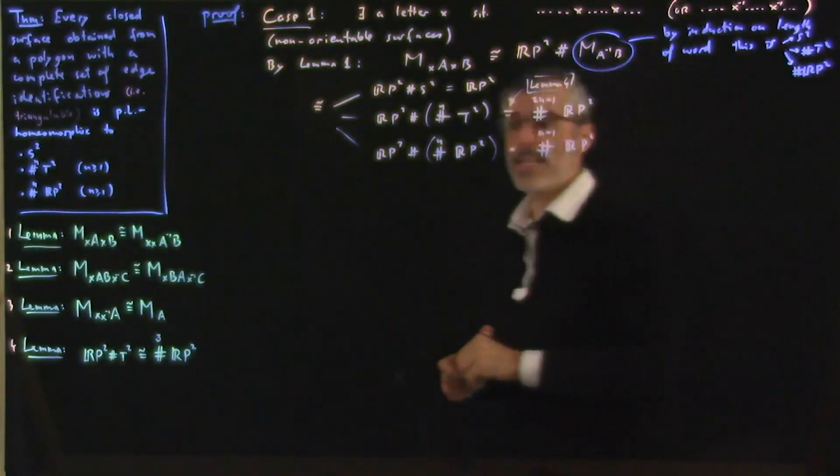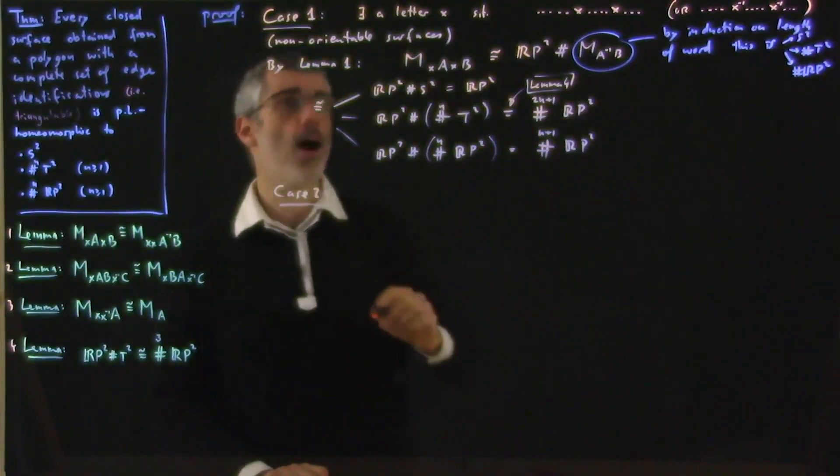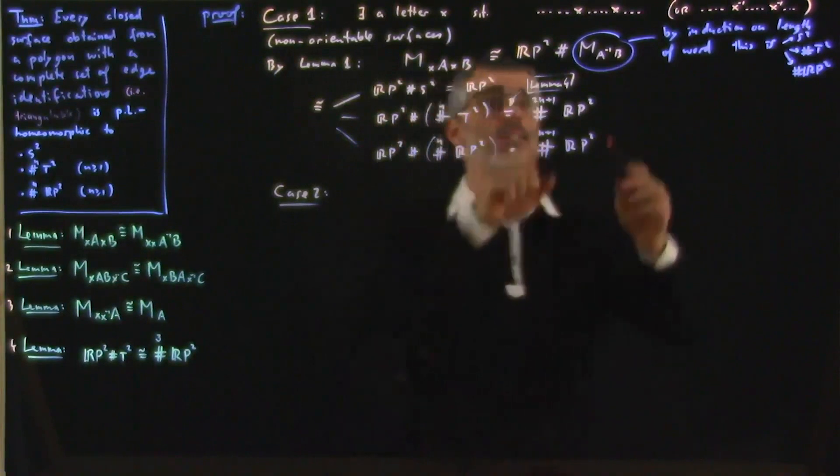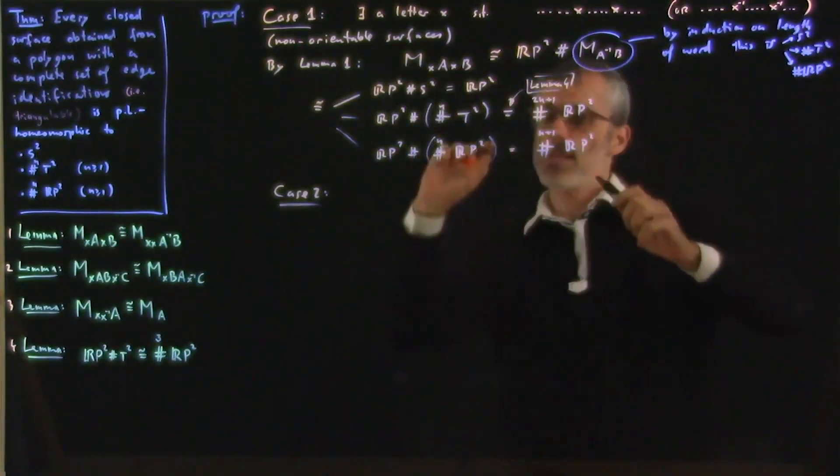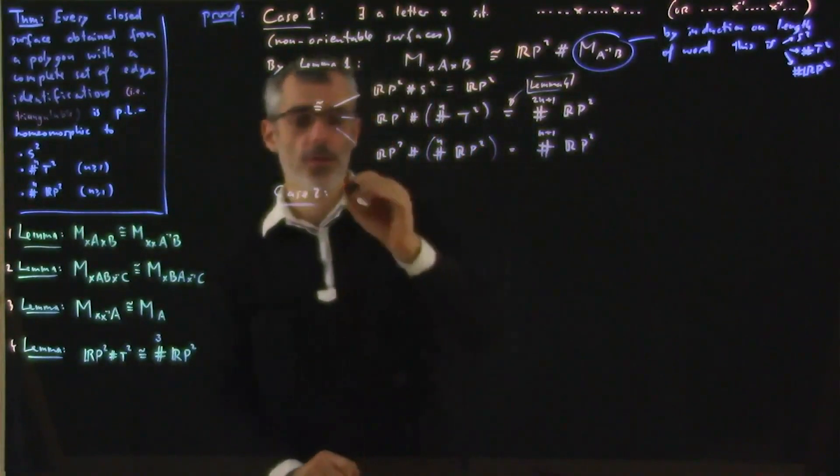So let's do case two. So case two, now we're assuming that no letter appears twice the same. Like, every letter appears as x and then x inverse. So this is the case of orientable surfaces.